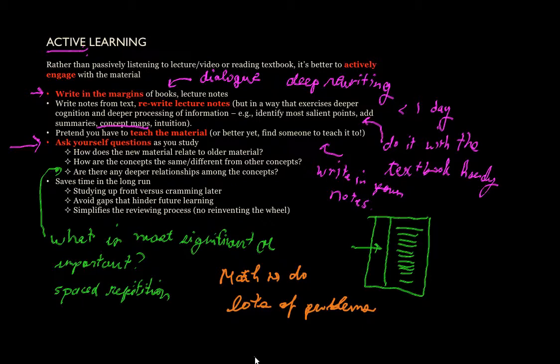And then finally, since part of the process of active learning involves identifying key points and intuition, when you do come back to your notes, you'll find that you don't need to relearn everything from scratch. You can often look at the summary and that'll be enough to jog your memory, or you'll be able to look at the underlying intuition and that'll be enough to help you understand something better. This is something that you see often in mathematics.